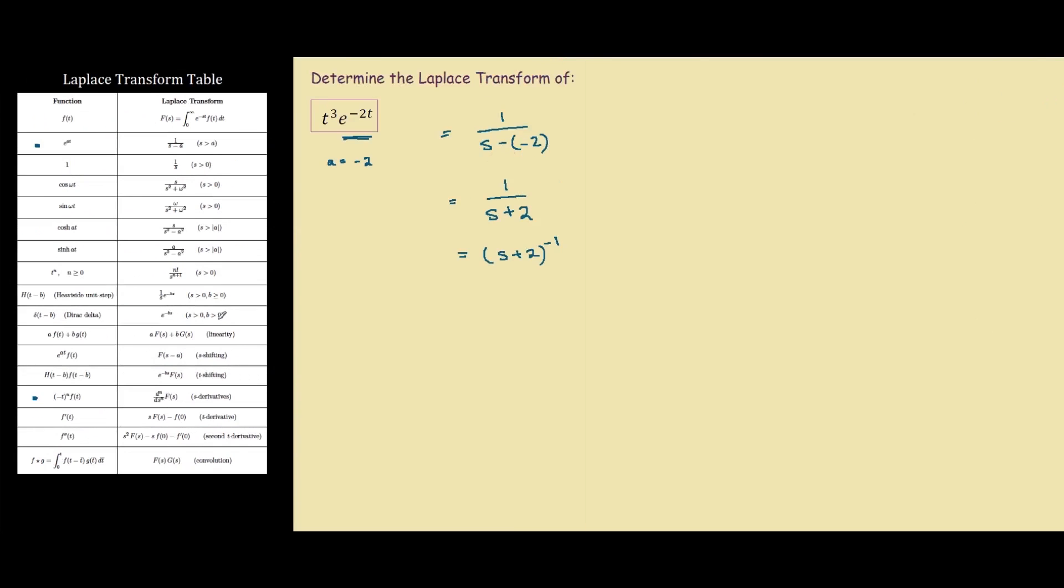However, in our question we have no negative. So when we look at our Laplace transform solution, we have a negative. And it's telling us to find the derivative, d^n over ds^n of the function f of t. And we know our f of t is our function here, e to the power of at.